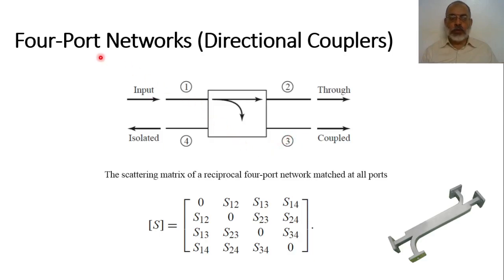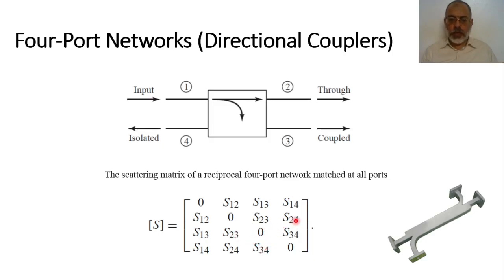For a matched 4-port network, the general scattering matrix for a matched and reciprocal network has zeros along the diagonal — S11, S22, S33, S44 are all zero. Because it is reciprocal: S12=S21, S13=S31, S23=S32, and S24=S42. These are the general scattering matrix entries for a matched and reciprocal 4-port directional coupler.